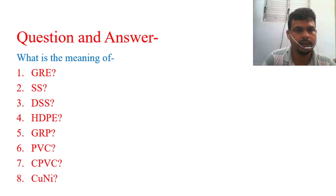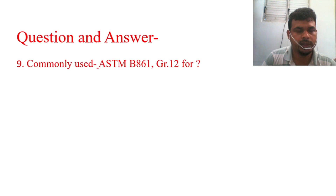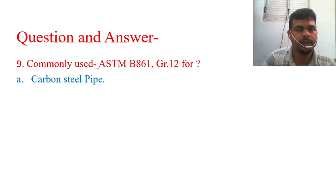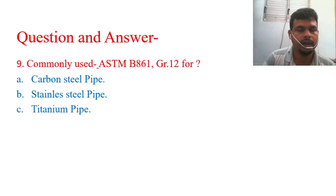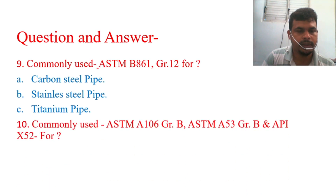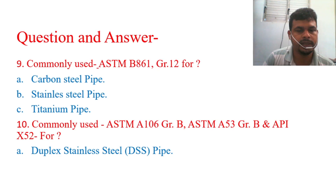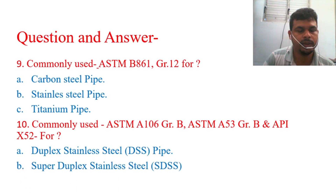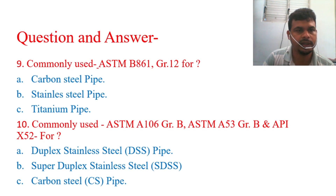Next, Question 9: ASTM A106 Grade B, ASTM A53 Grade B, and API 5L X52 are commonly used for which type of metallic pipe — duplex steel pipe, super duplex steel pipe, or carbon steel pipe? You should be able to answer this. If you listened carefully, you will be able to answer.